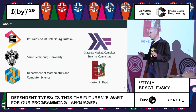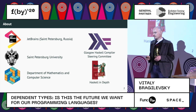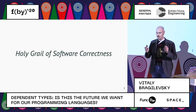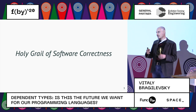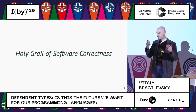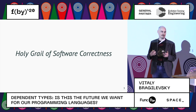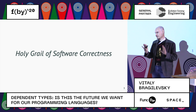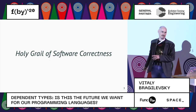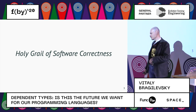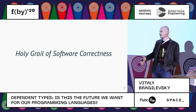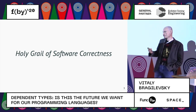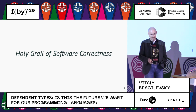This talk is about dependent types, and it's about the holy grail of software correctness. Sometimes we want our software to be correct. Some people said here, well, we don't need tests, we don't need all that stuff — it works and it's fine. But usually we want this software correctness stuff.